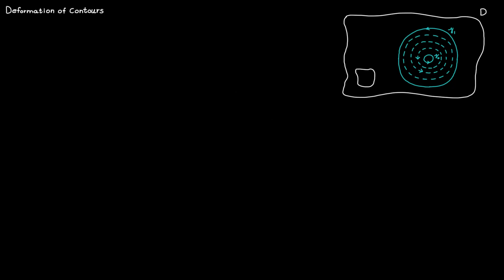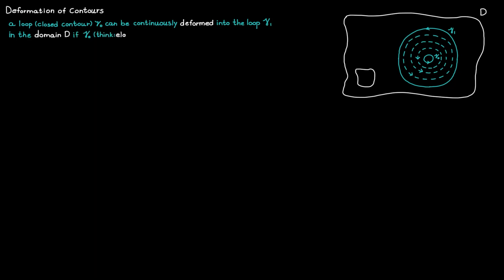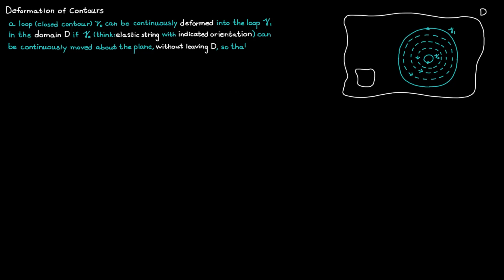To be a little bit more precise, we say that a loop, which is another name for a closed contour, gamma zero, can be continuously deformed into another loop, gamma one, in the domain D. If the loop gamma zero — think of it as an elastic string with orientation that you can mold and deform as you like — can be continuously moved about the plane without leaving the domain D, so that it coincides with gamma one, both in position and in orientation.